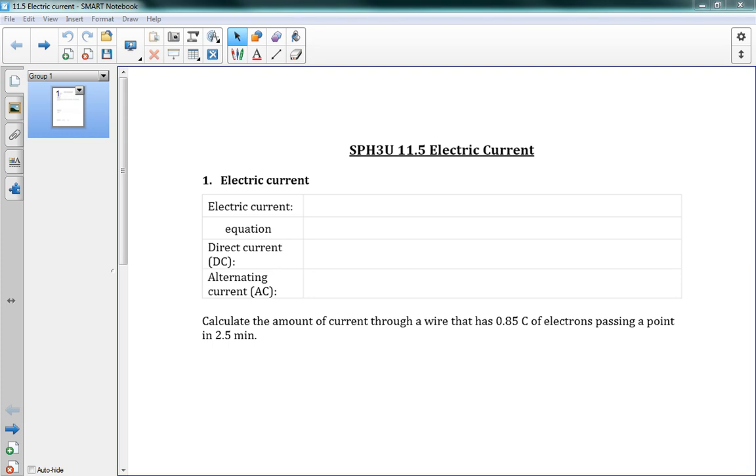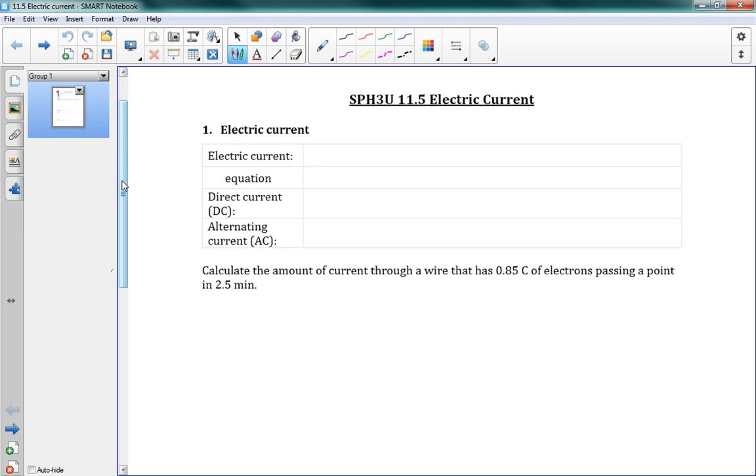Okay, this is 11.5 electric current. So this lesson is pretty closely linked with the last one where we were looking at voltage. Voltage and current are two of the main pieces in what we're going to be looking at in this chapter.